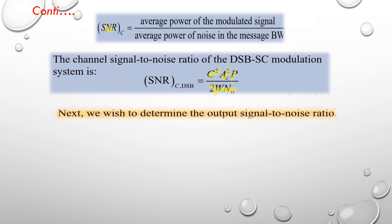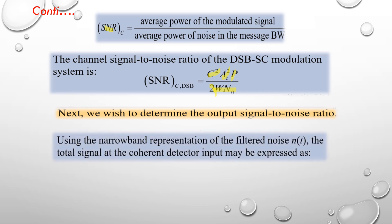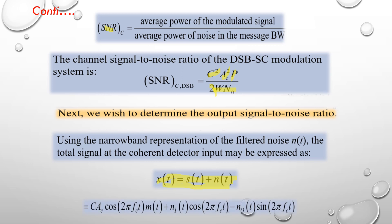Next we wish to determine the output signal-to-noise ratio. Using the narrowband representation of the filtered noise n(t), the total signal at the coherent detector input is the bandpass filter output x(t) = s(t) + n(t), where s(t) = C × A_c × cos(2πf_c t) × m(t) and n(t) = n_i(t) × cos(2πf_c t) − n_q(t) × sin(2πf_c t). Here n_i(t) is the in-phase component, n_q(t) is the quadrature component, cos(2πf_c t) is the carrier, and sin(2πf_c t) is the quadrature carrier.